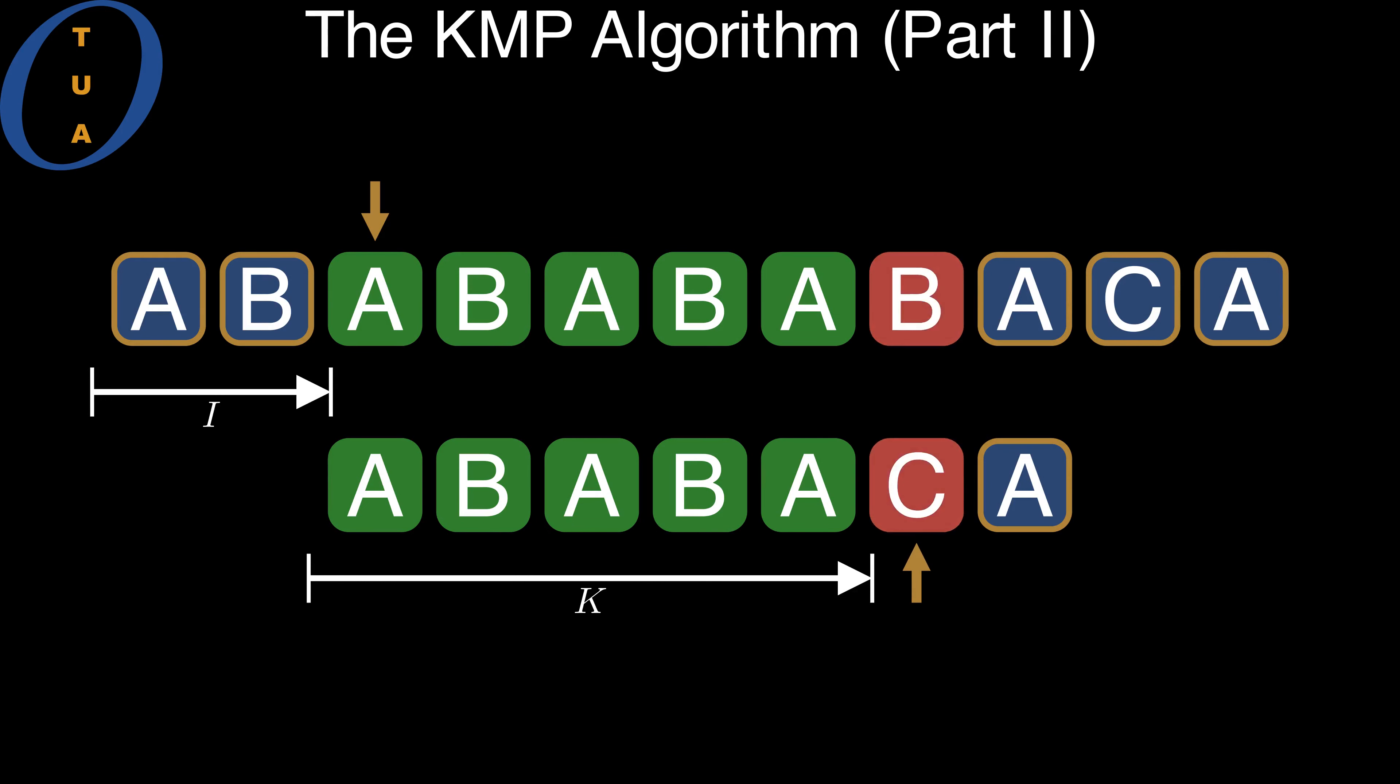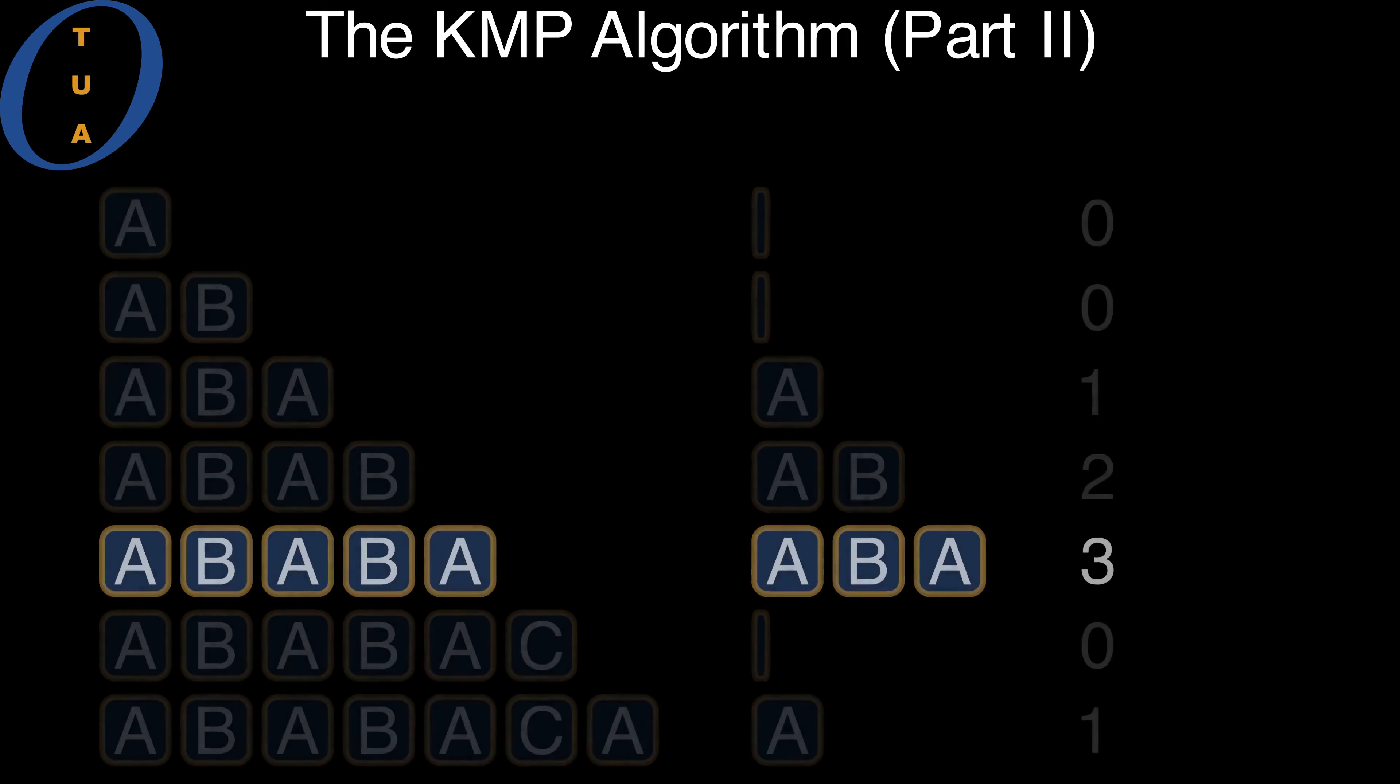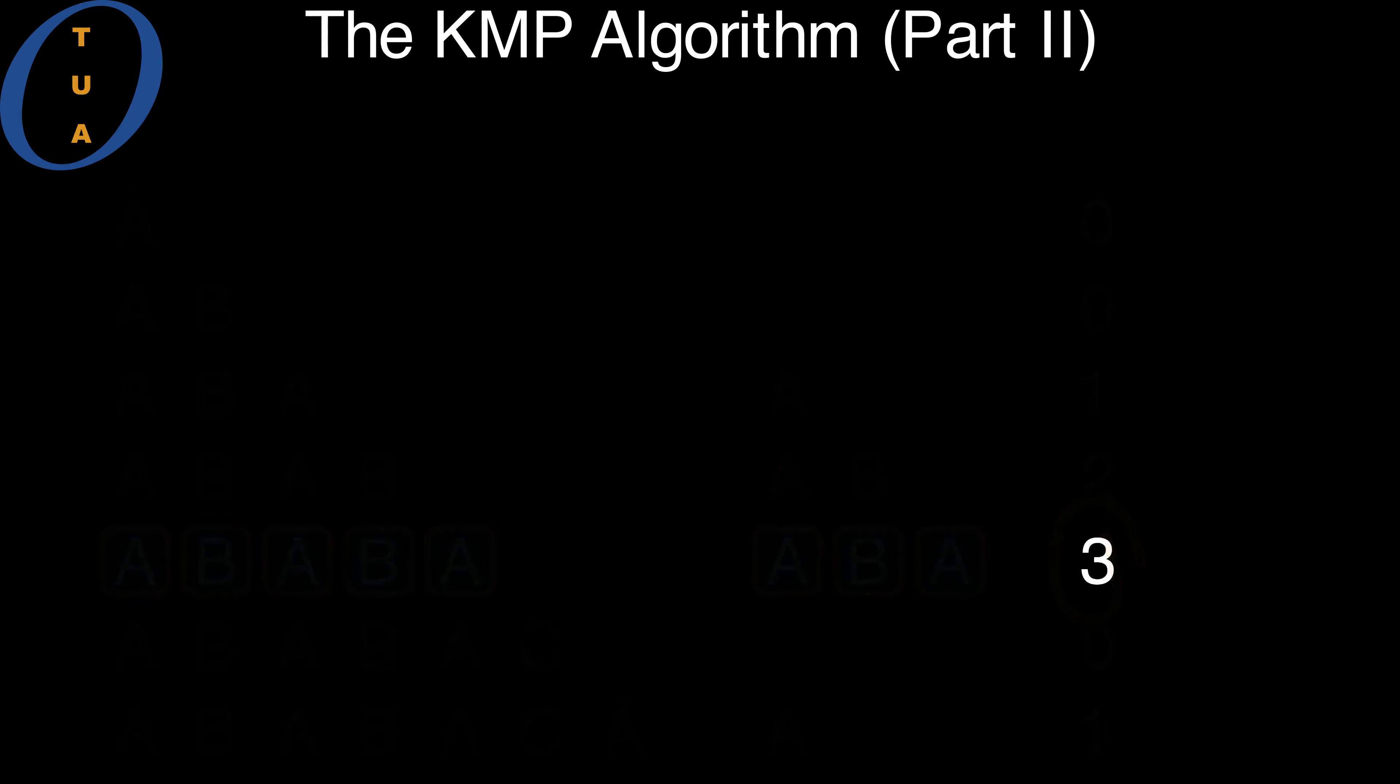When a comparison fails, things get interesting. By using the pre-computed failure function, we retrieve the length of the border in constant time.